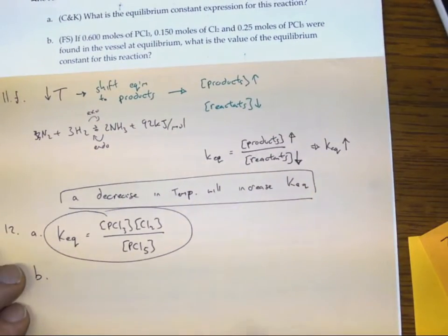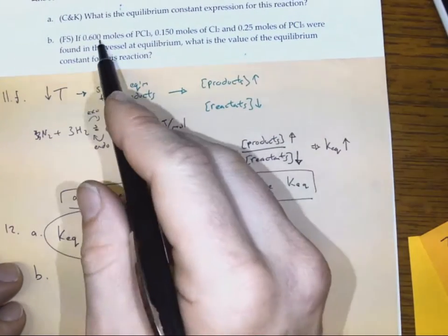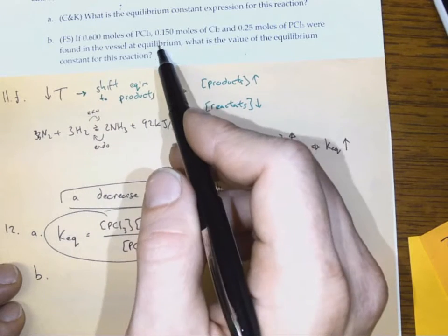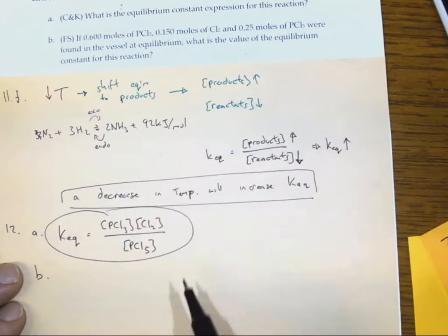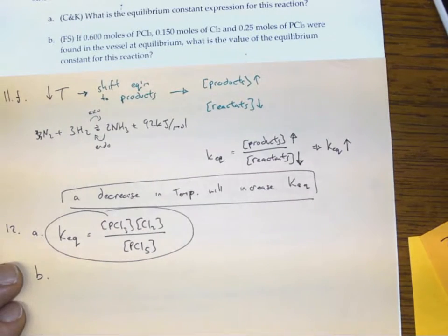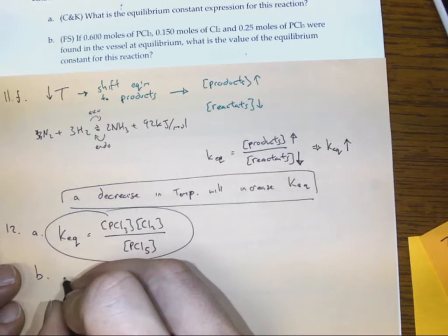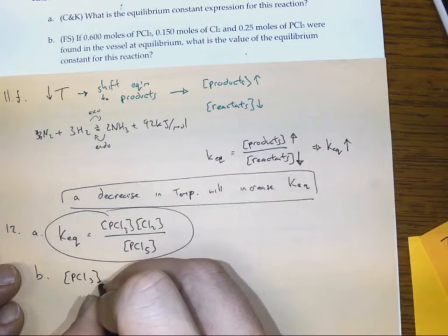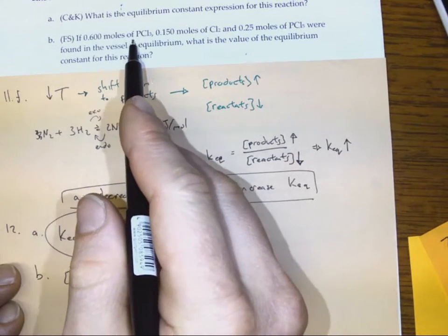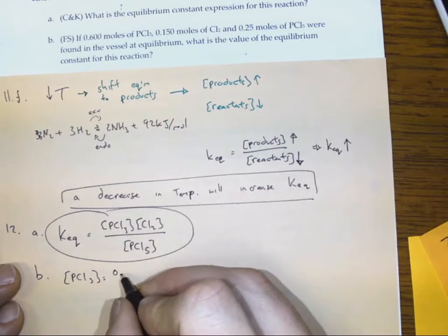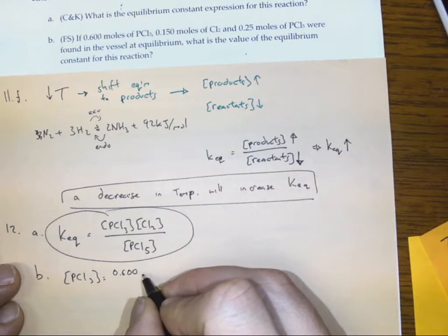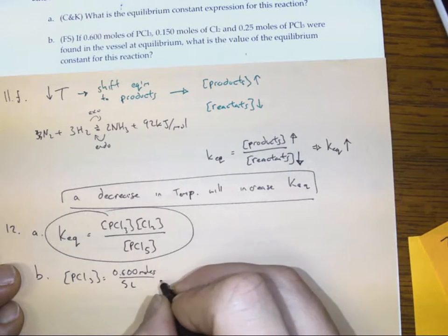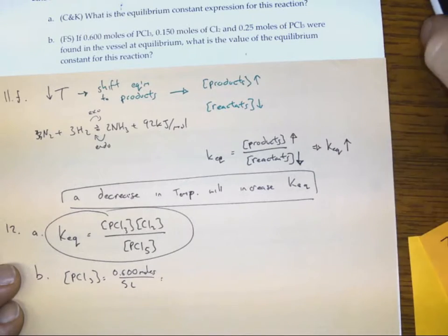12B asks: if you know some concentrations or moles at equilibrium, what's the value of the equilibrium constant for this reaction at that temperature? To do that we need to know the concentration of PCl₃. That's going to be 0.6 tenths of a mole for every 5 liters, which is 0.12 molar.